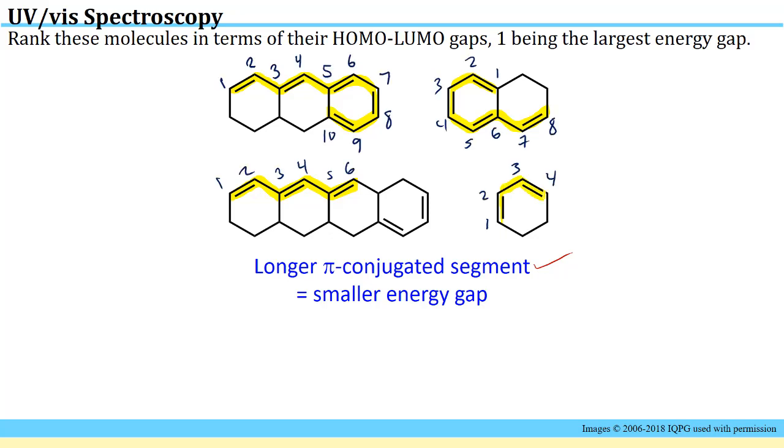If we figure out how many atoms are involved in each of these pi conjugated systems and use our general rule that a longer pi conjugated system equals a smaller energy gap, we can rank these. If one belongs to the largest energy gap, the largest energy gap would be the shortest pi conjugated system. The next shortest only has six atoms in its pi conjugated system. You don't care how long the whole molecule is, just the pi conjugated system that contributes to that pi to pi star transition. Third largest energy gap would be here. The smallest energy gap for the longest pi conjugated segment would belong to the molecule shown at the top left.